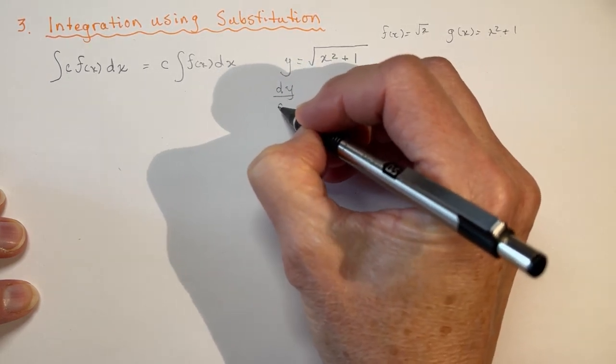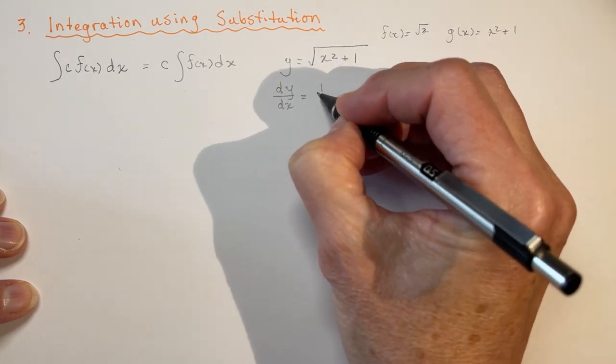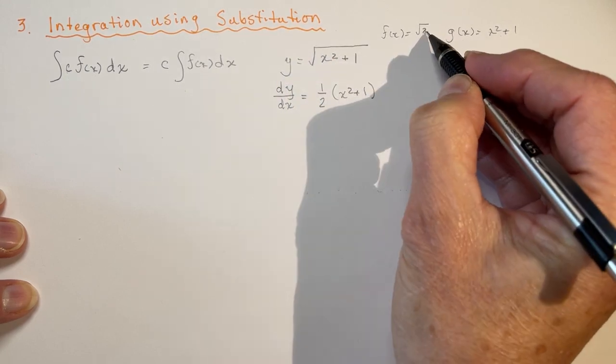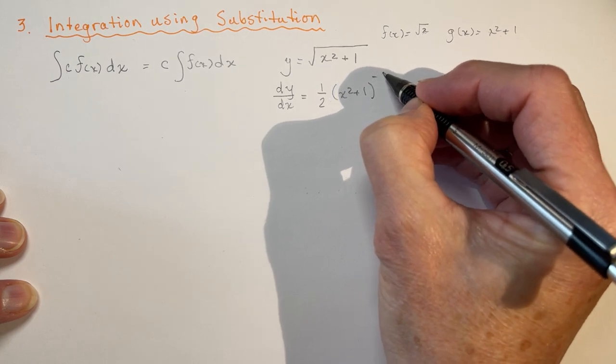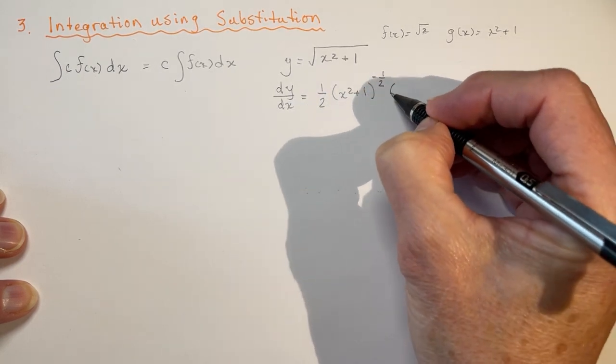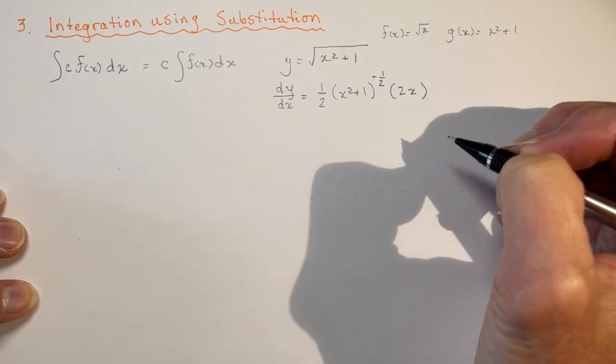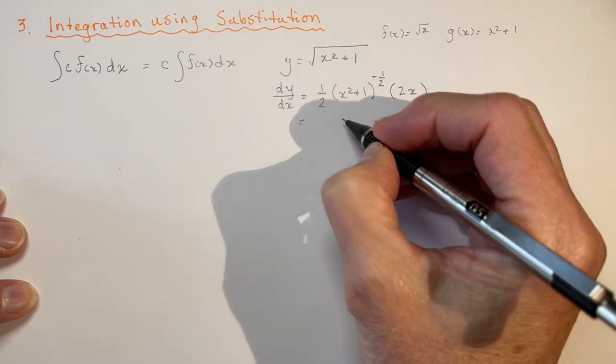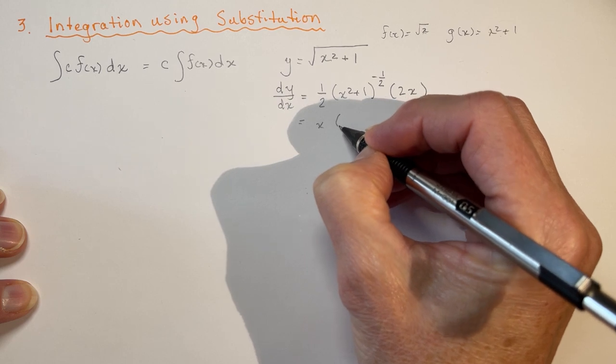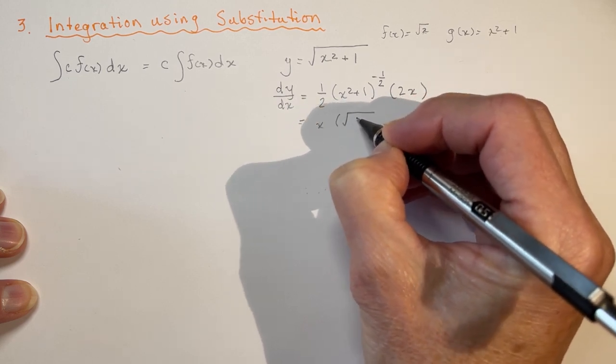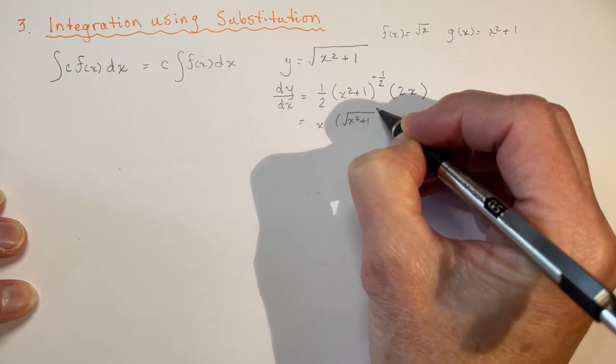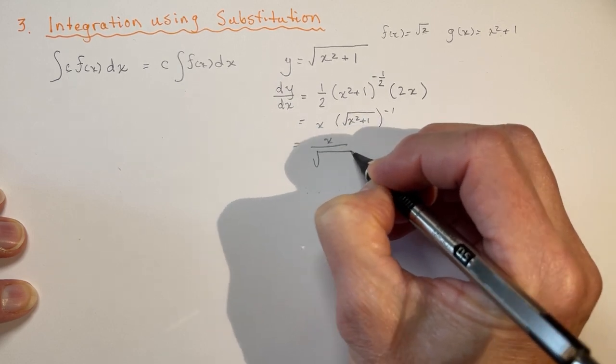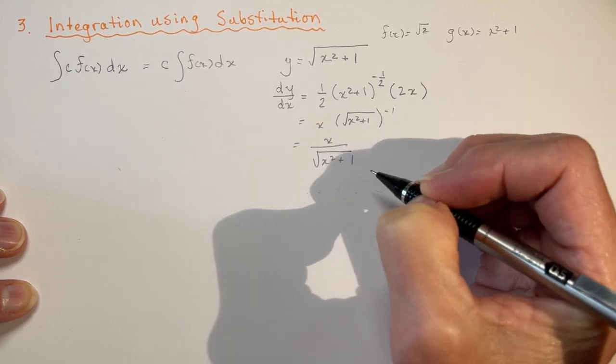I'm sure you would have said the derivative of y with respect to x. And you'd say 1 half. Remember, you're using the chain rule. So I take the derivative of the original function. So that's the root of x to the minus 1 half. And then the derivative of the inside, which is 2x. So when you simplify this, you would end up with just x times the square root of x squared plus 1 to the minus 1 still. Or x over the square root of x squared plus 1.